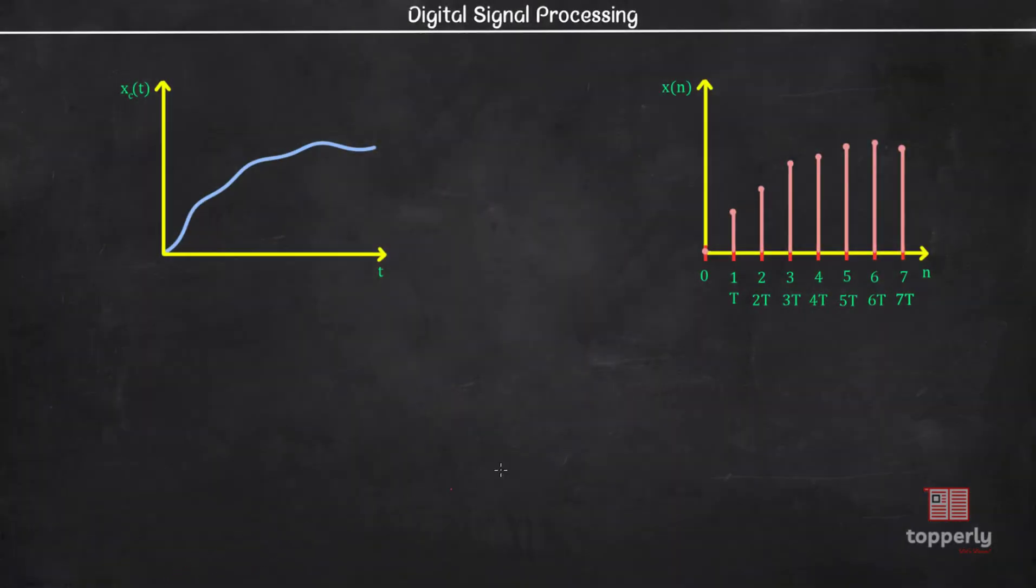As discussed in the first lecture of the DSP series, a discrete time signal is obtained by the periodic sampling of a continuous time signal. This can be described by the relation x of n equal to xc of nT, where x of n is the discrete time signal obtained by taking samples of the continuous time signal xc of t at every capital T seconds.